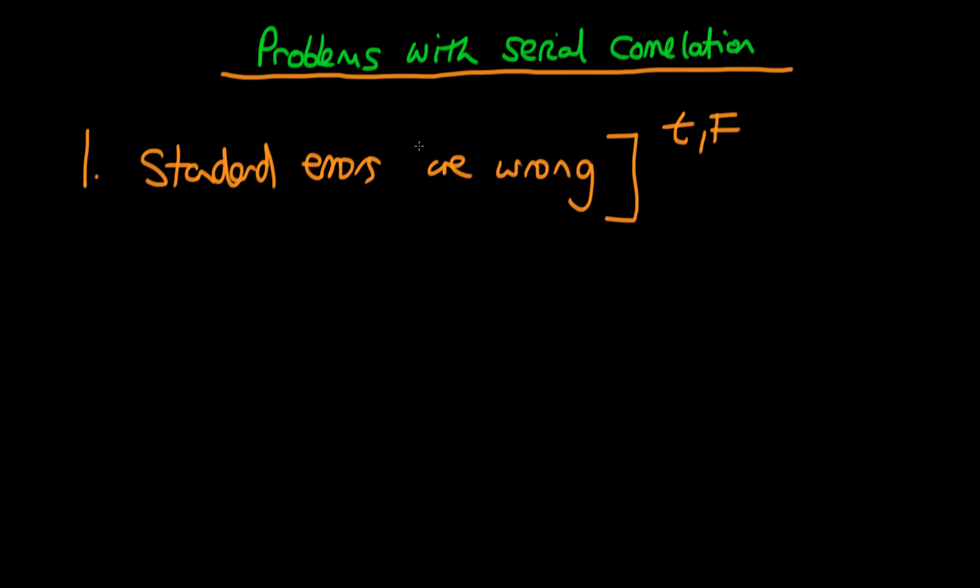Luckily there is a way to correct for these standard errors in the presence of serially correlated errors, and in most software programs it's very easy to do. That's using what we call Newey-West standard errors, which take into account the fact that the error itself might be serially correlated. Once we correct the standard errors for the presence of serially correlated errors, we can then proceed as normal for inference, so then we can use t and F statistics and formulate some hypothesis about what's going on in the population.